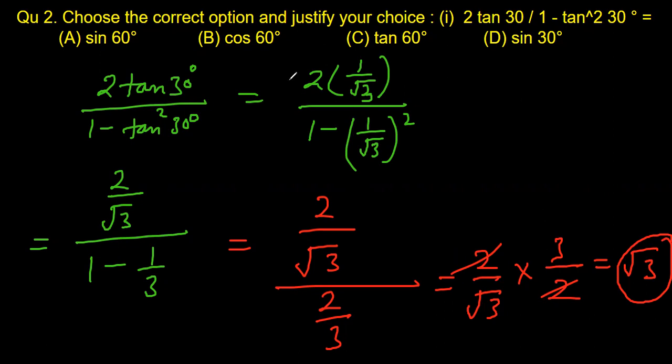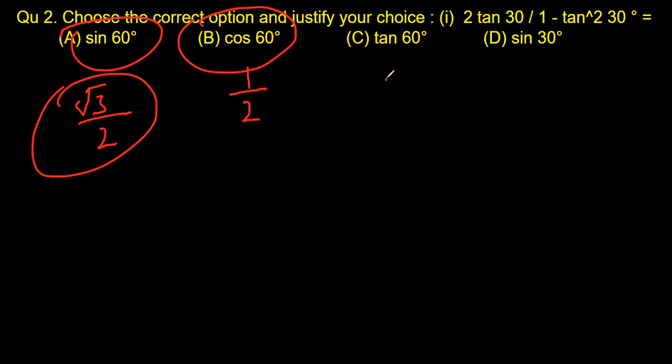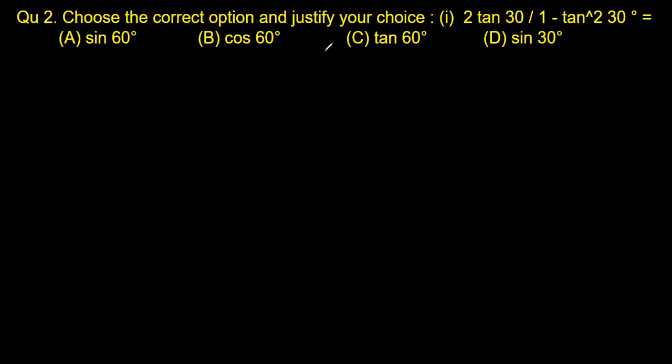Now which of these options will be equal to root 3? Look, sin 60 which is root 3 by 2, so not an answer. Cos 60 which is 1 by 2, not an answer. Tan 60, root 3, right, so C is the correct answer. Sin 30 is of course 1 by 2, so not an answer. So the correct option here is C because the value after simplifying this expression is same as the value of tan 60.